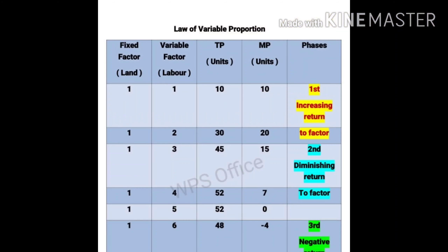Look at the screen. In the first column, the fixed factor — land — is given as one acre throughout, because in the short period land cannot be increased. We can increase the variable factor: labor goes from one to two, three, four, five, and six. When one labor worked on one acre, total production was ten units. With two laborers it became thirty — so marginal product (MP) is thirty minus ten, which equals twenty. This is the additional production, the marginal product.